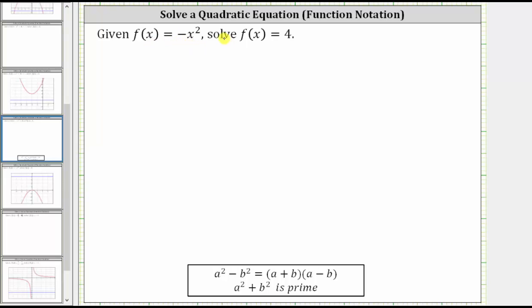Given f of x equals negative x squared, solve f of x equals four. To solve f of x equals four, we are looking for the inputs or x values of this function where the output is positive four.